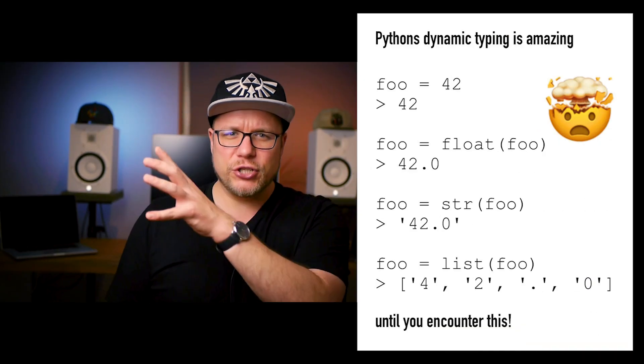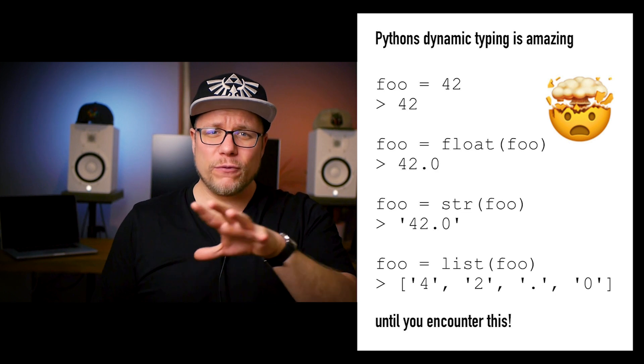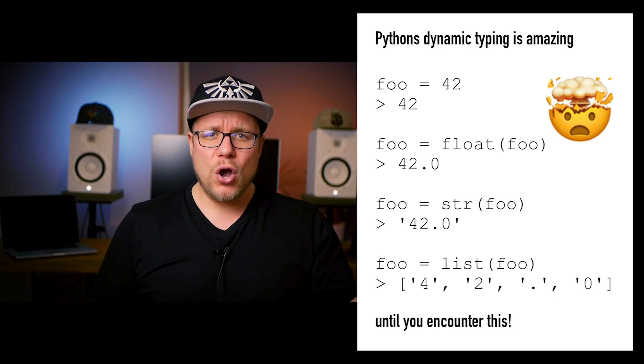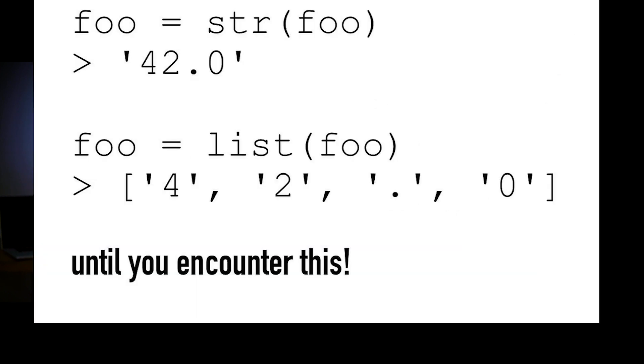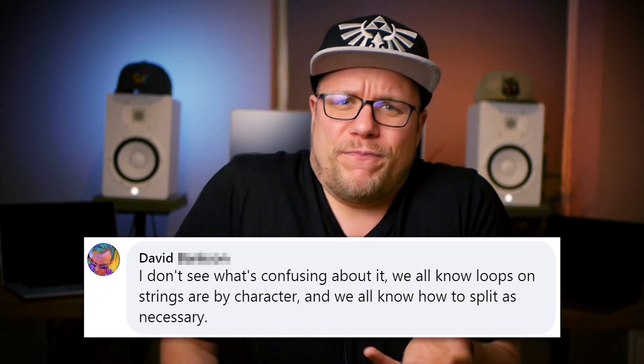We all love Python for its dynamic type system. You start with an integer, you convert it to a float, a string, and if it gets converted to a list somehow you end up with this. I posted this image on my Facebook and Instagram — the links are in the description below. Of course I got some smart ass comments, something like it is very easy, nothing serious, and I don't see what's confusing about it.